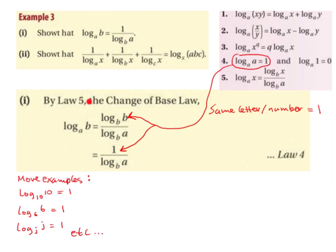Starting with number one, we are going to use Law 5, which is the change of base law. Law 5 says log base a of x equals log base b of x divided by log base b of a. This is called the change of base law because the base, which starts off as a, becomes b. Whatever number we had in place of x goes into the numerator, and whatever our original base was goes into the denominator.